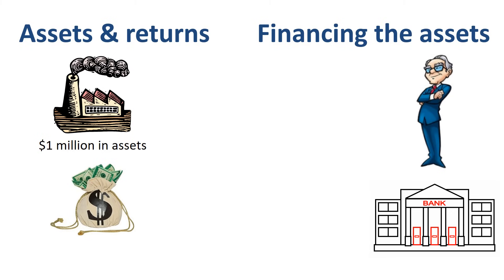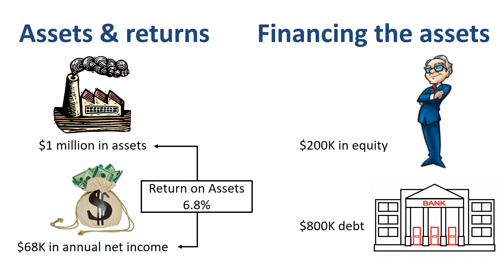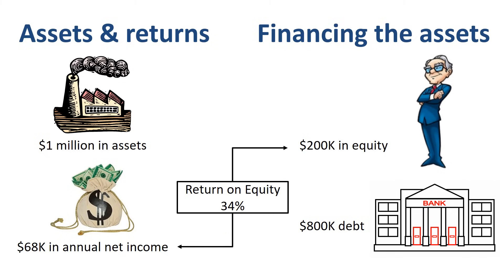How about taking that one step further? What if we finance the assets with $200,000 in equity and $800,000 in debt? Net income drops to $68,000, and return on assets drops accordingly to 6.8%. Return on equity, however, goes up dramatically: $68,000 in net income divided by $200,000 in equity generates a return on equity of 34%.